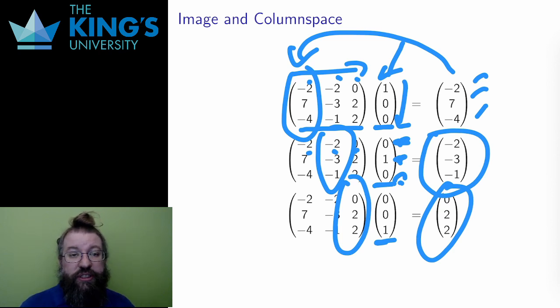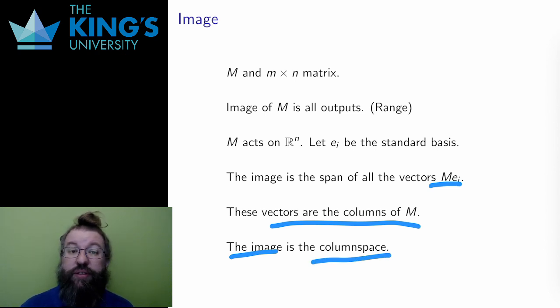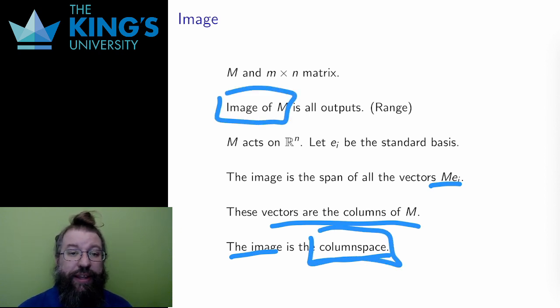The result is that the output Me_i just gives the columns of the matrix. I showed this by example, but this is true in general. Therefore, the image is described by the span of the columns. And I just gave that a term, a name, the column space. The image of the matrix is the same as the column space of the matrix. This is yet something else I can get out of the matrix that describes something important about the transformation.